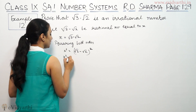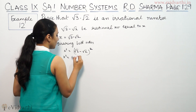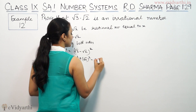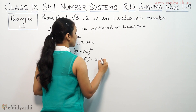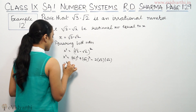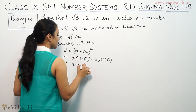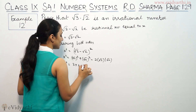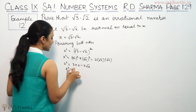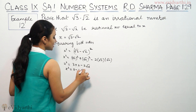Here we have x squared equals a squared plus b squared minus 2 times a times b. So this will be x squared equals 3 plus 2 minus 2 root 6, which gives us x squared equals 5 minus 2 root 6.